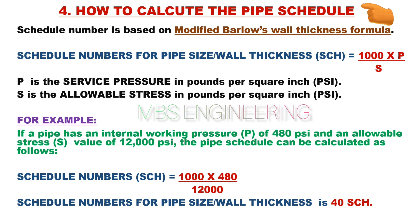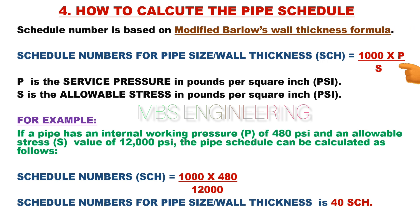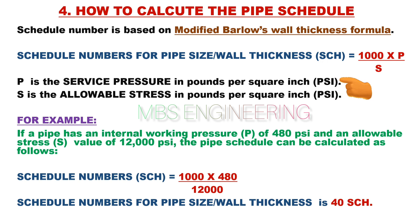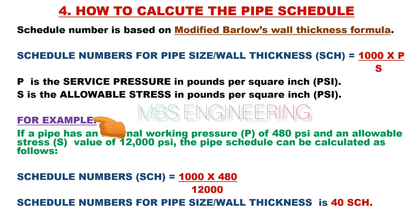Next, we will understand how to calculate the pipe schedule. The schedule number is based on the modified Barlow's wall thickness formula. The formula is: SCH = 1000 × P / S, where P is the service pressure in pounds per square inch (psi) and S is the allowable stress in pounds per square inch (psi).